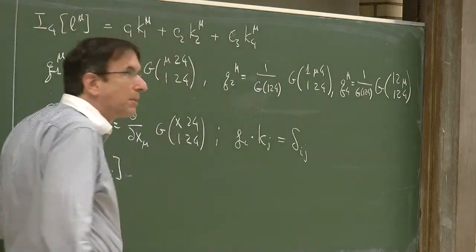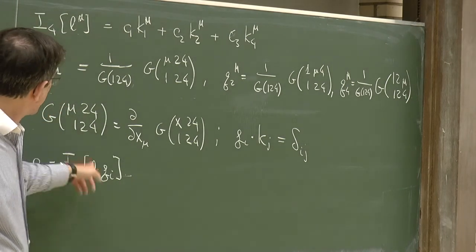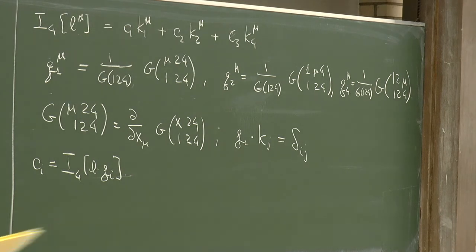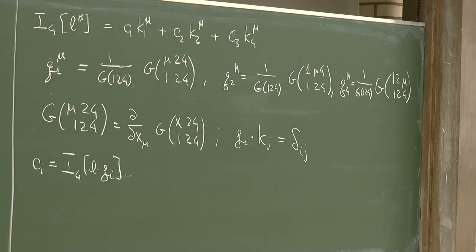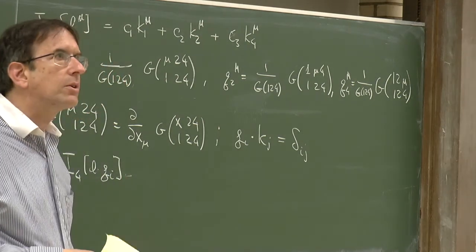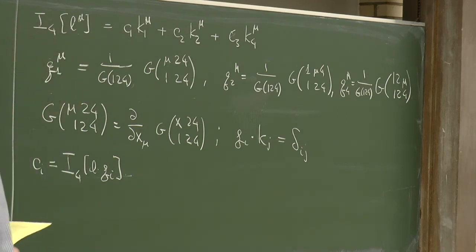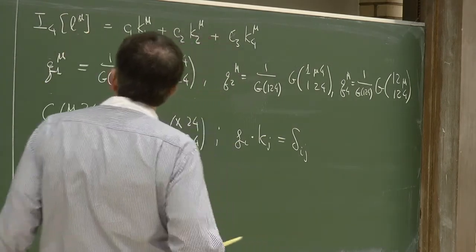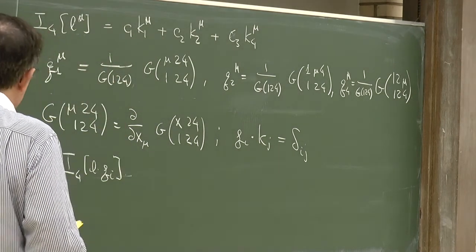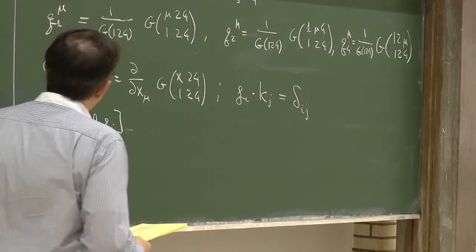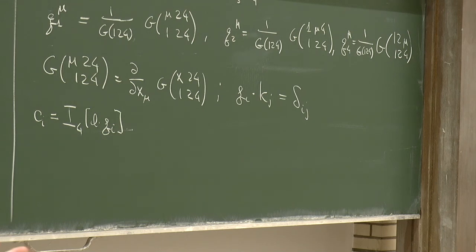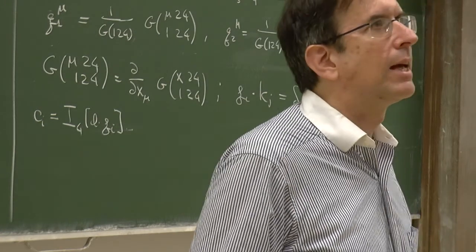I've picked something that's linear — how have I made progress? If I expand the Gram determinant, it's in terms of L dot K1, L dot K2, or L dot K4. I can rerun this rewriting, expressing dot products in terms of differences of denominators plus external invariants. So I'll ultimately be able to write this in terms of triangles and scalar boxes. You can do the same exercise for two-tensor, three-tensor, four-tensor integrals, and likewise for triangles and bubbles. The only thing you cannot do in four external dimensions is reduce the scalar box, scalar triangle, or scalar bubble — those are left as basic symbols at the end.